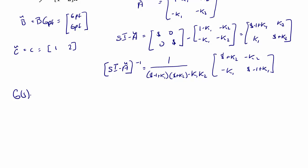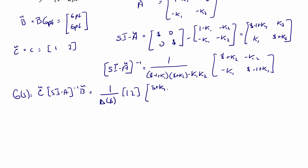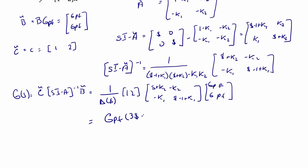Now we find the transfer function G(s), which is C-tilde times (sI minus A-tilde) inverse times B-tilde. This equals 1 over the characteristic equation delta(s), times [1, 2] times [s plus K2, negative K2; negative K1, s minus 1 plus K1] times GPF. That all simplifies to GPF times (3s minus 2) over s-squared plus (K1 plus K2 minus 1)s minus K2.